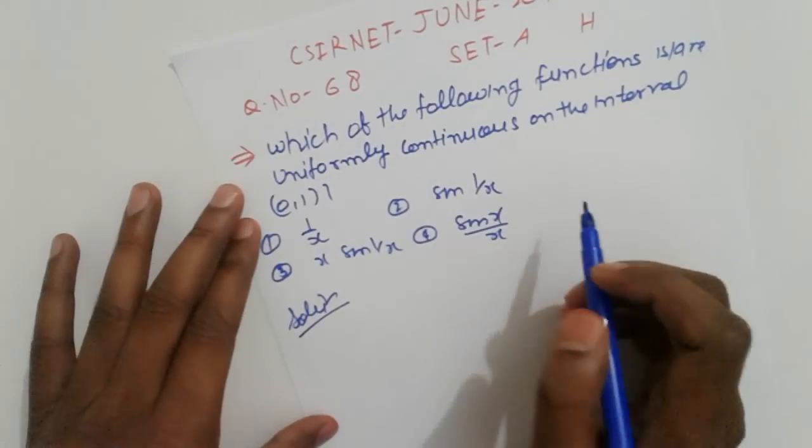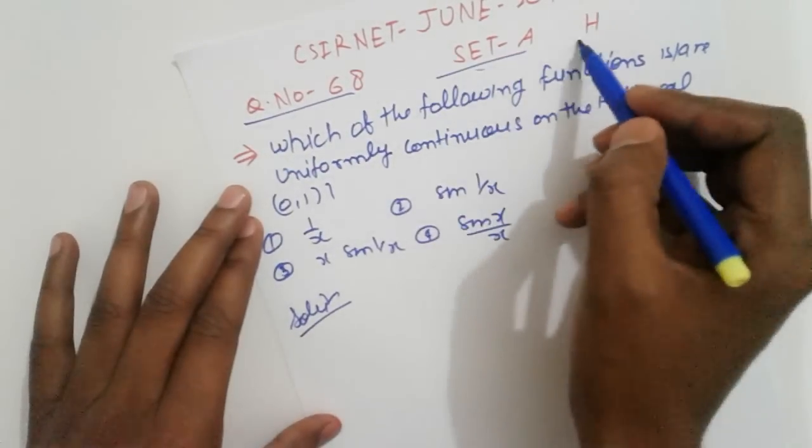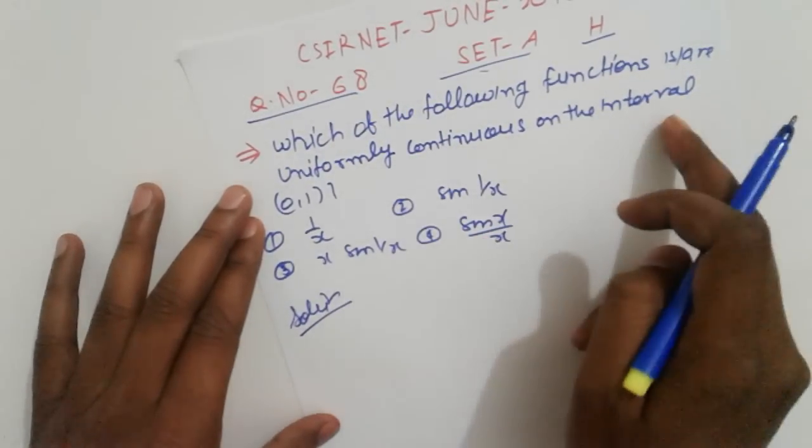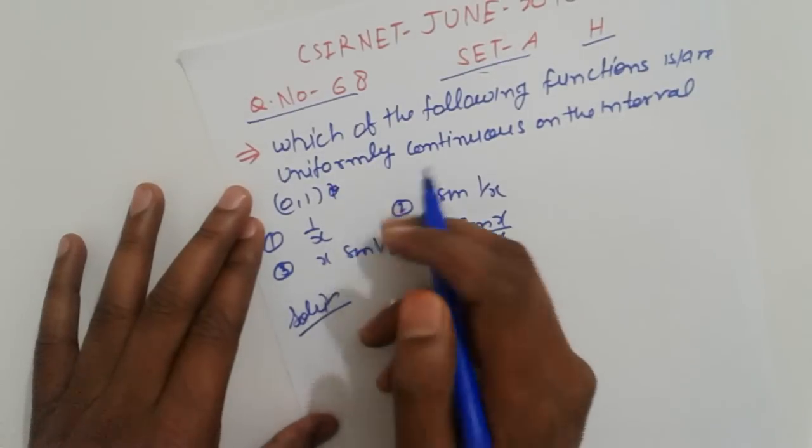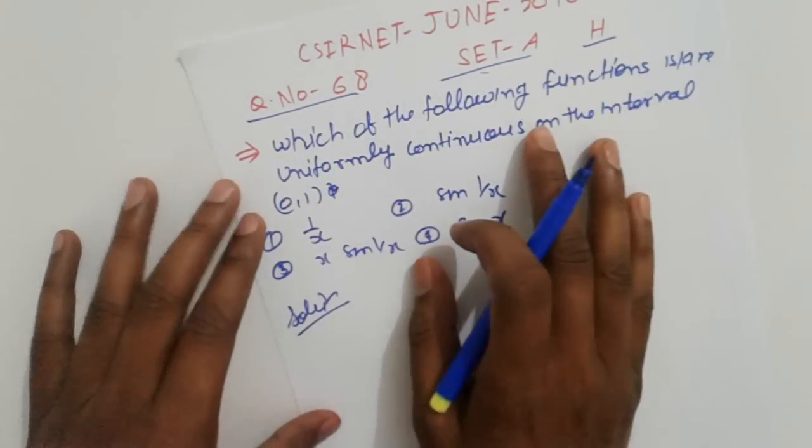Season 8, June 16th. Good morning friends. Question number 68, Set A, Medium level. Which of the following functions are uniformly continuous on the interval (a,b)? So this type of problem is from CSIR NET December 2016.